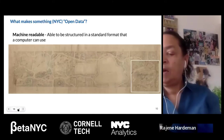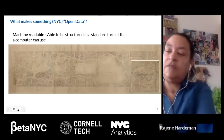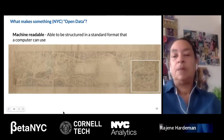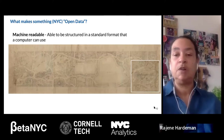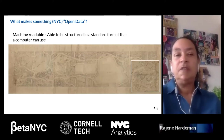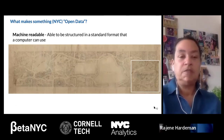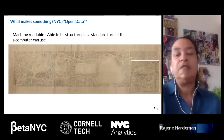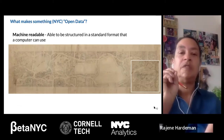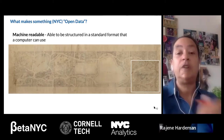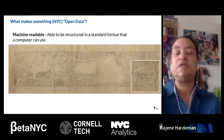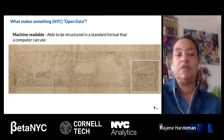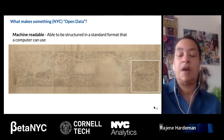Not everything can be publicly available open data. The first criteria for something to become New York City Open Data is that it has to be machine readable. By machine readable, it means it has to be structured in a way that a machine can capture and interpret the information — mostly structured data in rows and columns, but not necessarily. A computer has to be able to access the information to have it interpreted.